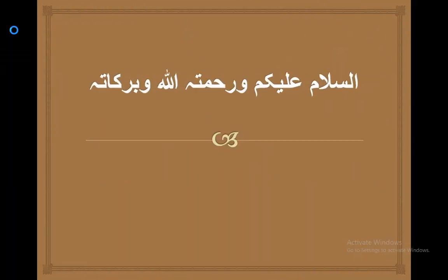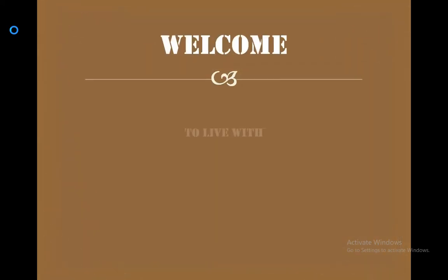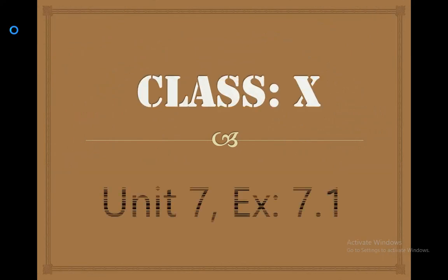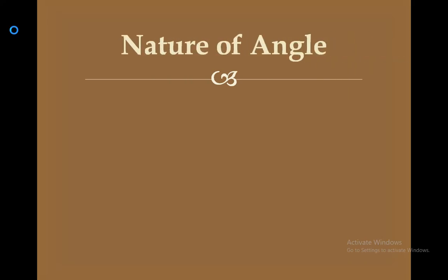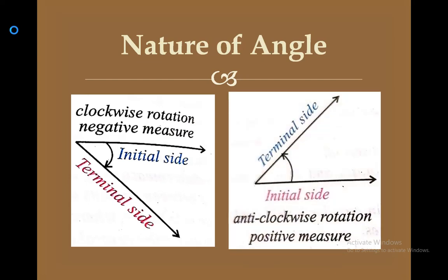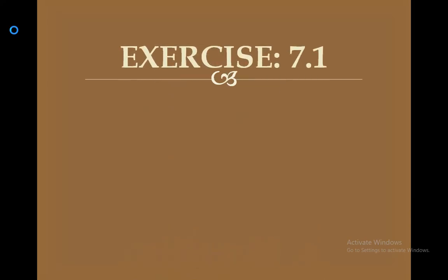Assalamu alaikum and welcome to Live with Hassan Akhtar. Today's lesson is a continuation of the previous lesson — class 10th, unit number 7, exercise 7.1. Let's review the nature of an angle: in clockwise rotation the angle measurement is negative, whereas in anti-clockwise rotation the angle measurement is positive. We will use this rule in question number one of exercise 7.1.